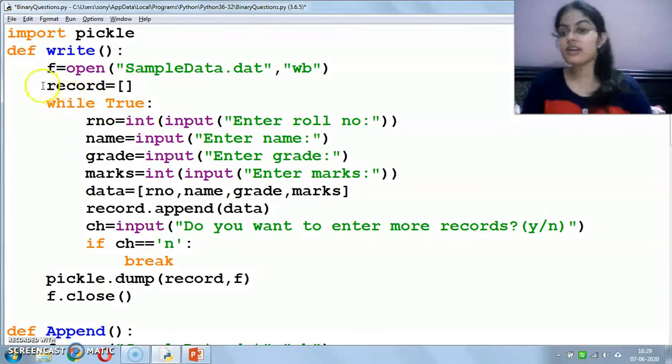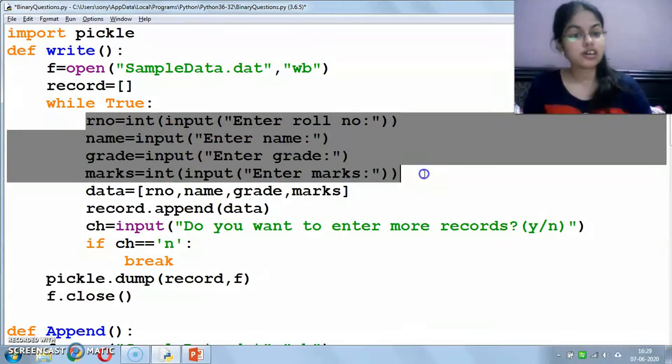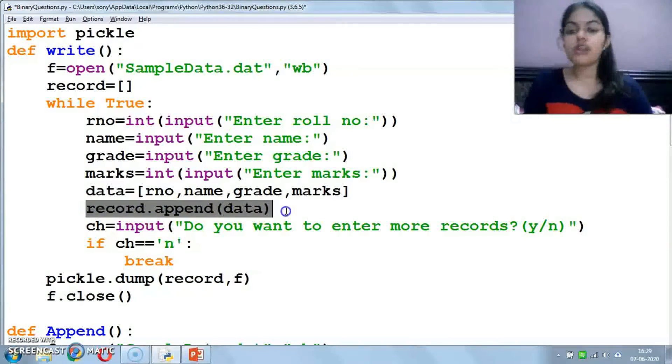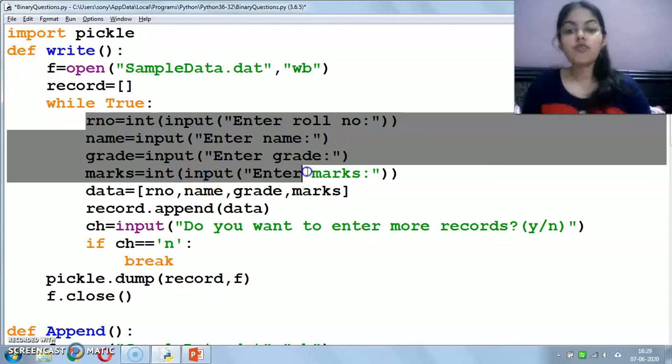You create an empty record list. While True means it will execute continuously. You will enter roll number, name, grade, and marks. I will create a list and store the data in a variable which is list type. Then I append to the record list. That means it will be a nested list which will be the complete record.